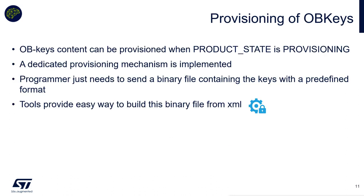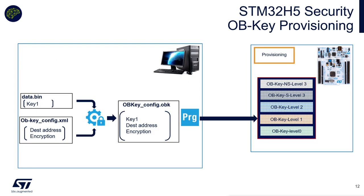Provisioning of OBKey should be done in a dedicated product state named 'provisioning.' A dedicated provisioning mechanism is implemented — the programmer just needs to send a binary file containing the key in a predefined format. We have a tool called Packet Trusted Creator to create those files. You give as input what you want to store as a key or data for your application. You also need an obkeyconfig.xml file describing the destination address, the level, and whether encryption is active. Then you use Q-Programmer with your target in a provisioning state.